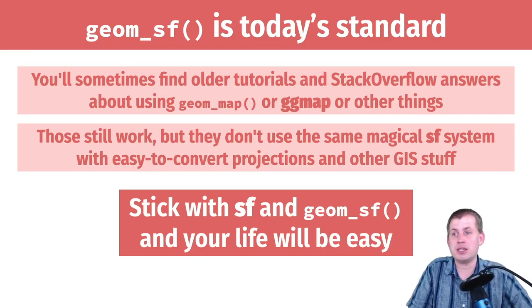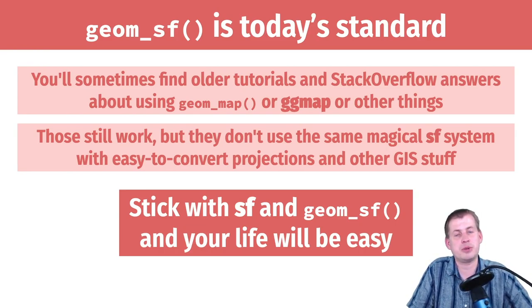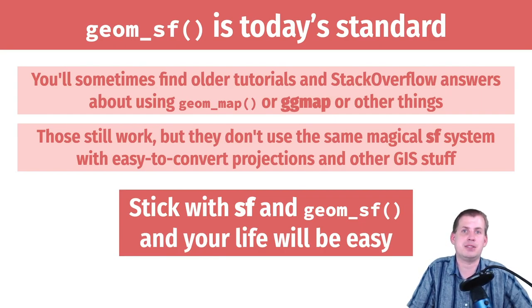In general, stick with the SF package and geom_sf — changing projections is as easy as coord_sf and suddenly you have whatever projection you want. It really is the standard way of doing mapping nowadays because it's so easy: just add geom_sf and you're done. There will be an example you can head over to and follow along with, and a short exercise where you basically just make a map and add stuff to it. Good luck with that.